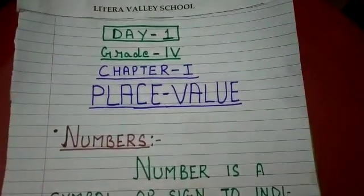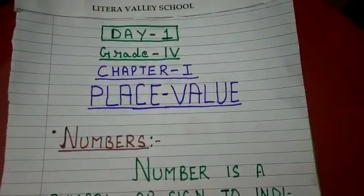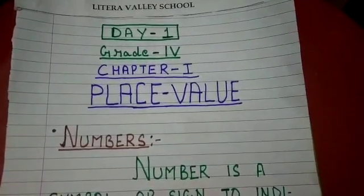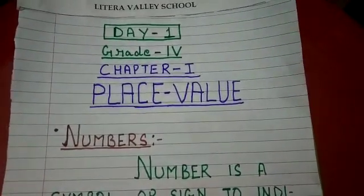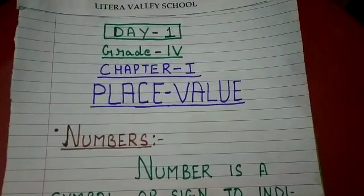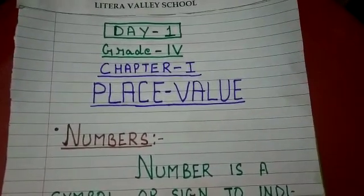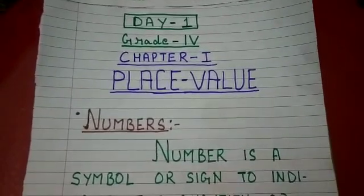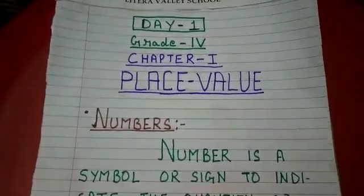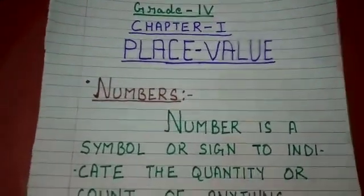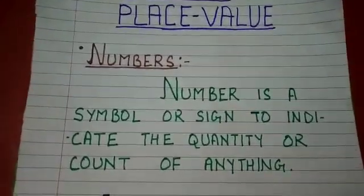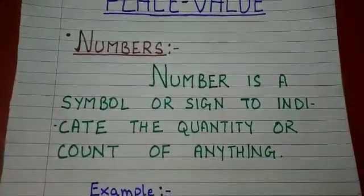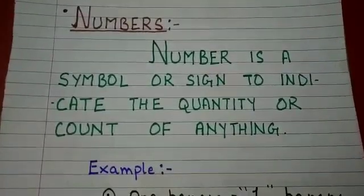Hello students, today we will learn about Chapter 1, that is place value. The first point in the chapter place value is numbers. So what is a number? A number is a symbol or sign to indicate the quantity or count of anything.